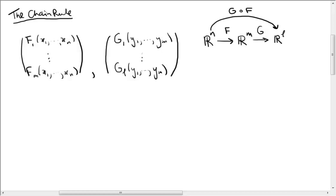I want to talk about the chain rule for differentiation of vector-valued functions. Suppose you have a function f which has m components, f1 up to fm, all of which depend on n variables, x1 through xn.